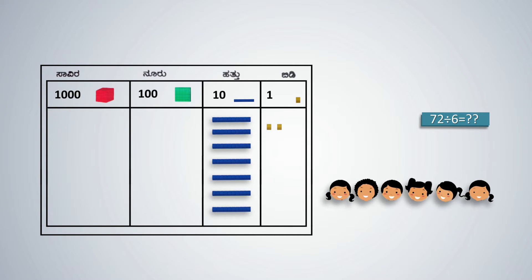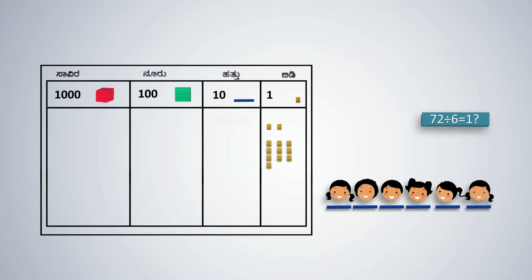Starting from the highest place value, which is the tens place, divide 7 tens by 6. The share of each is 1 ten and we are left with 1 ten. Since 1 rod cannot be divided into 6 equal parts, the blue rod must be regrouped as 10 yellow units to enable equal sharing.